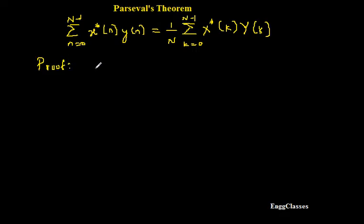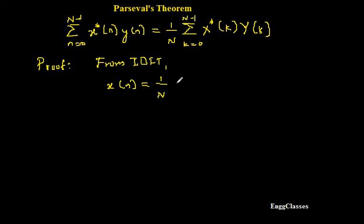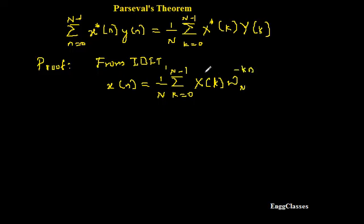To prove this, I have to consider the definition of IDFT. From the inverse DFT, we have: x(n) is equal to 1 divided by N, summation k equal to 0 to N minus 1, x(k) times W_N to the power of minus kn. This is the definition of IDFT that I will use to prove Parseval's theorem.